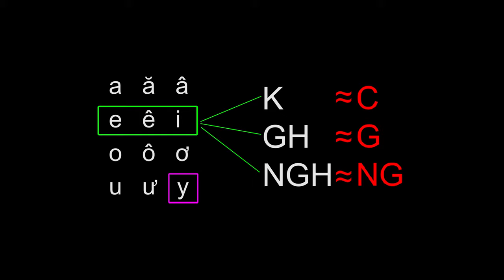So, if you haven't noticed, the K and the C produces the same sound, guh, guh, and the G-H and the G produces the same sound, guh, guh. The N-G-H and the N-G also produces the same sound, nguh, nguh.